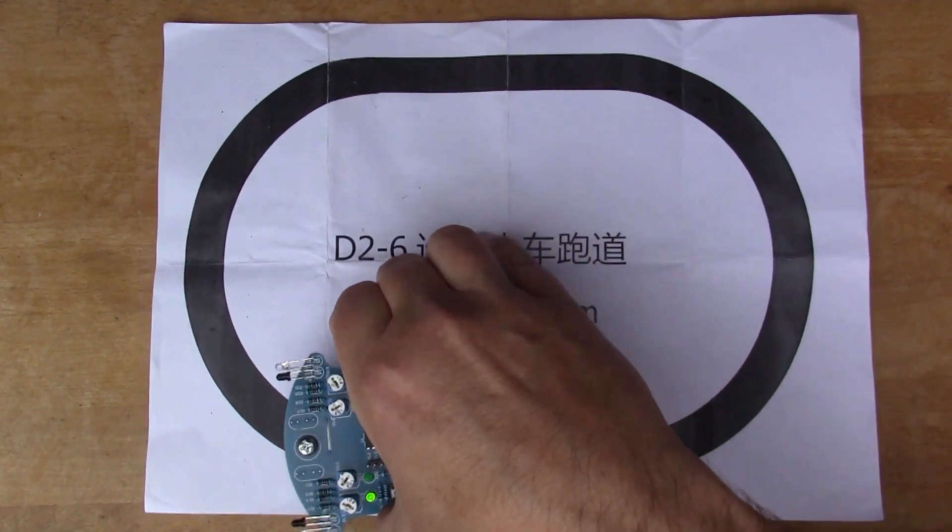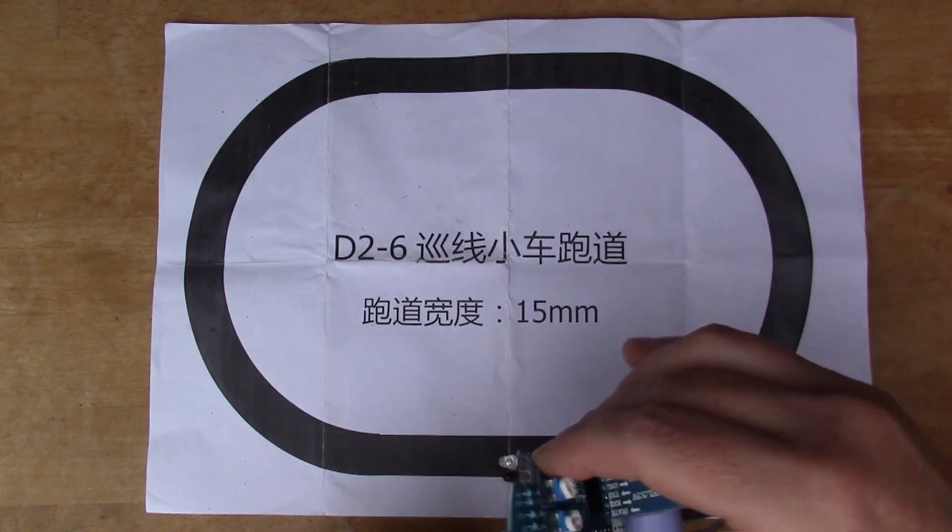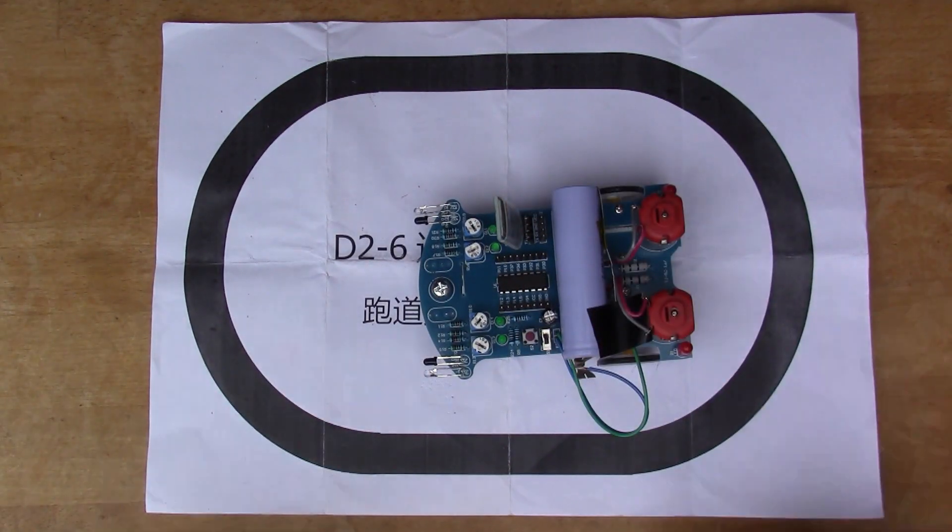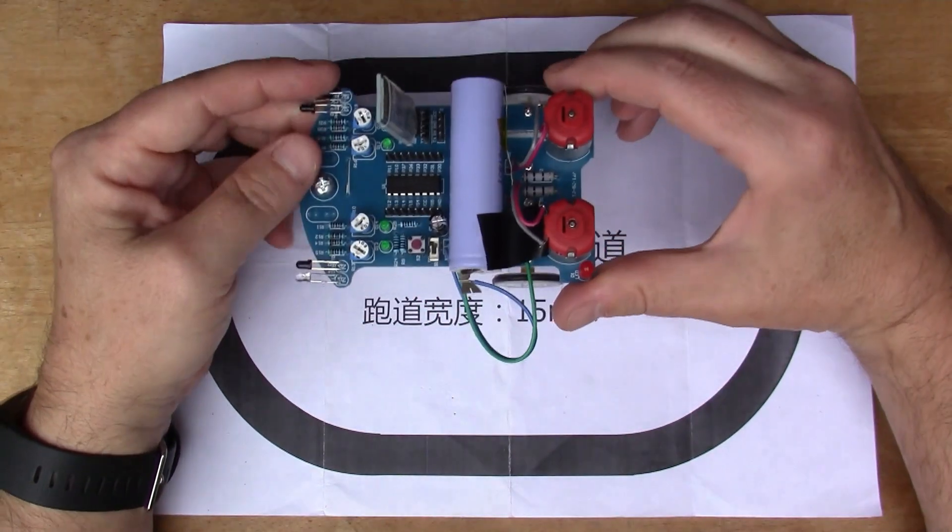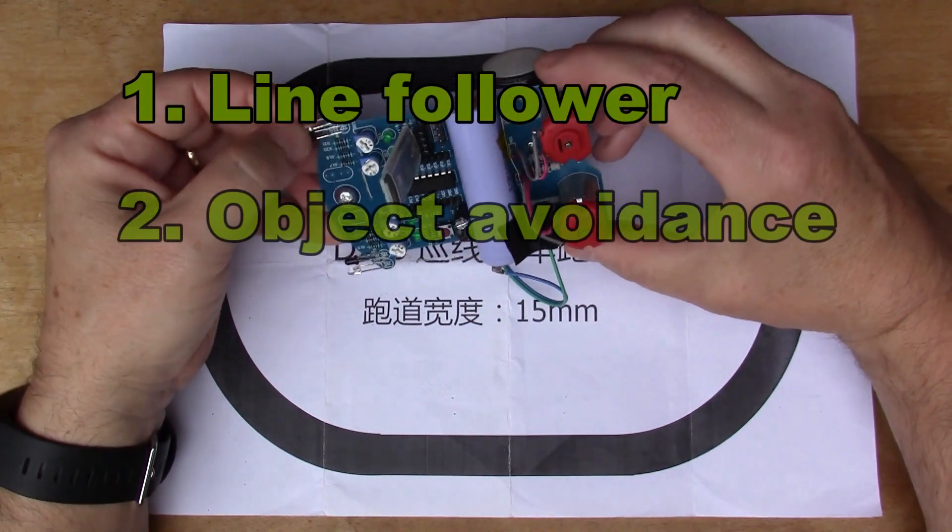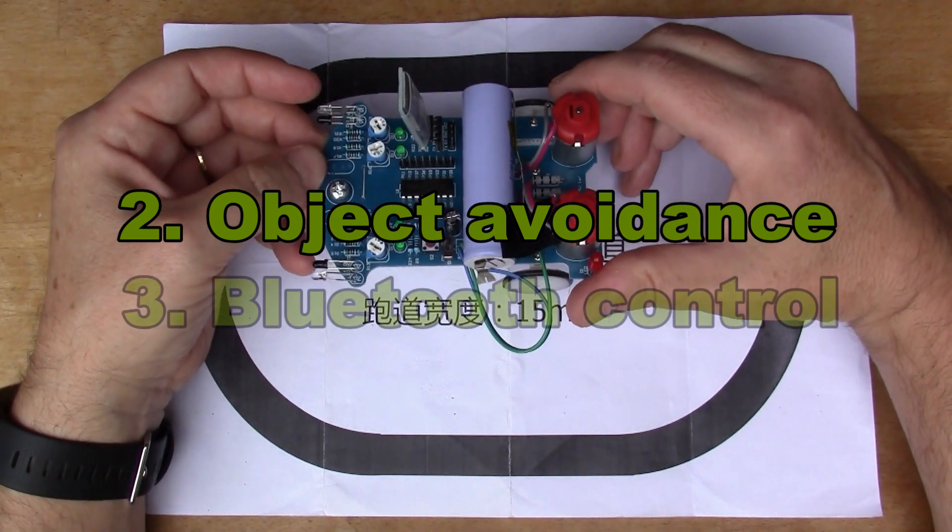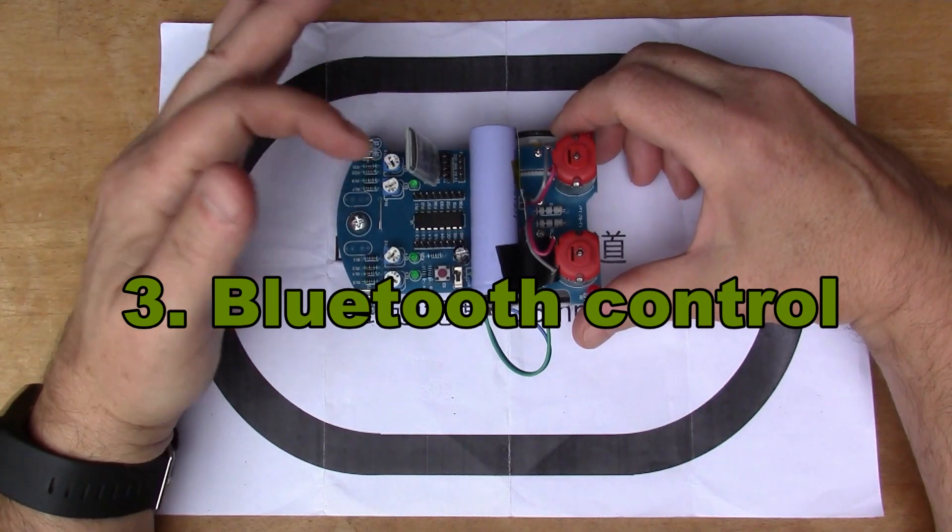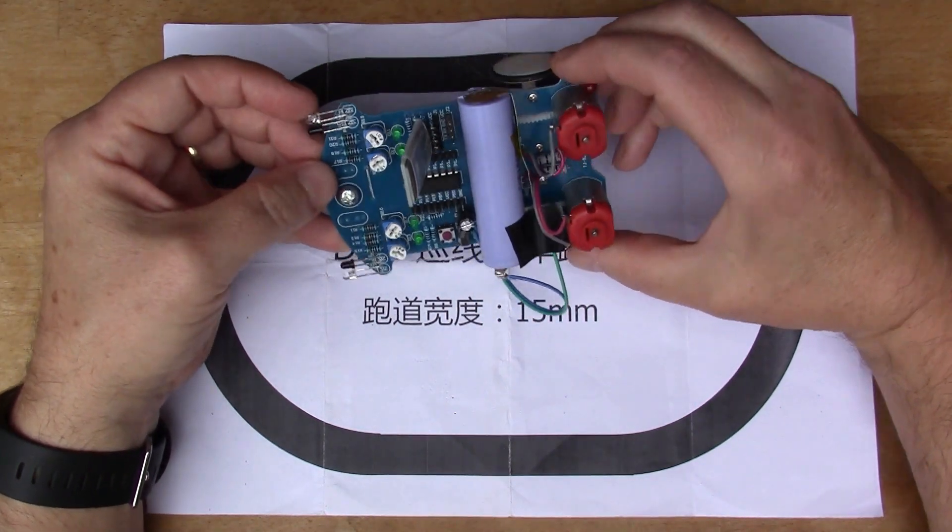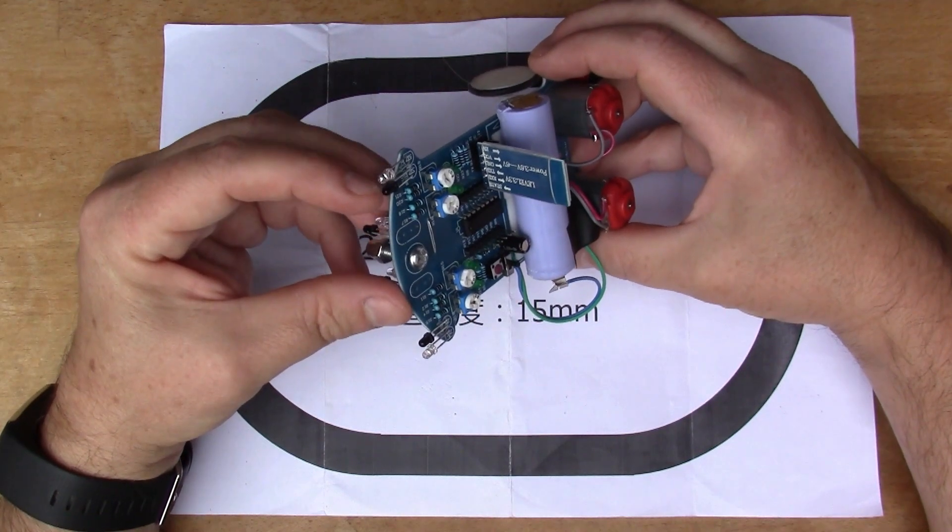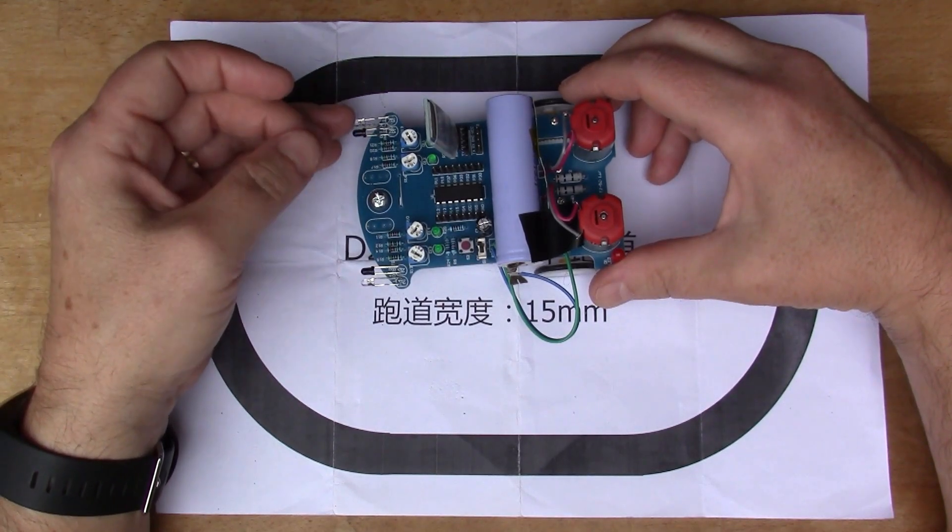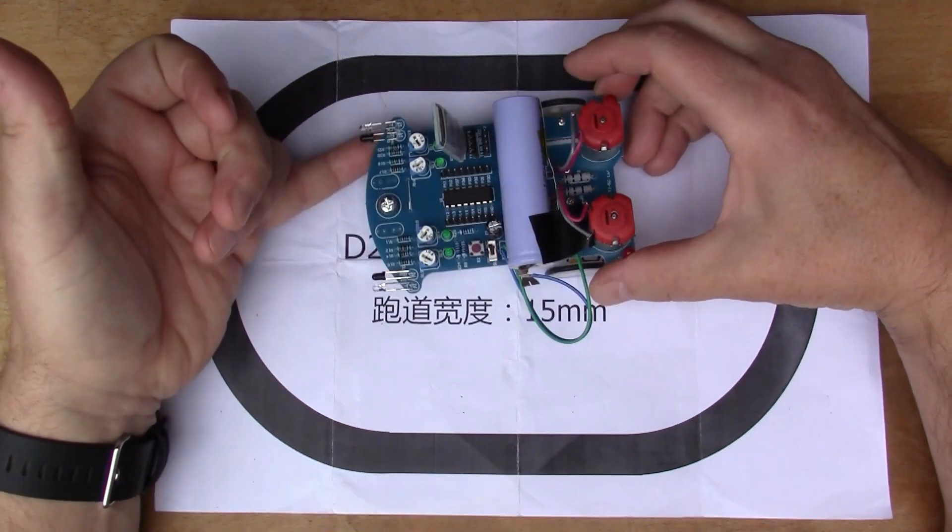That's the first thing that we can do with this, and that replacement cog of mine seems to work quite nicely. Now there are two other modes. The three modes are: number one line follower, number two object avoidance, and number three it can be controlled via the Bluetooth modem. The second one, the object avoider, uses these photodiode LED pairs on the front.